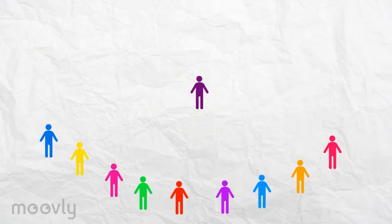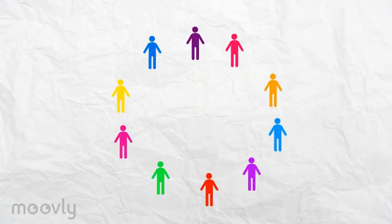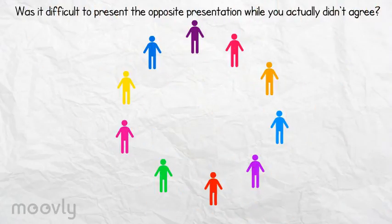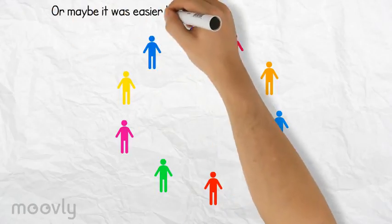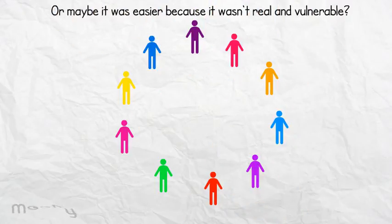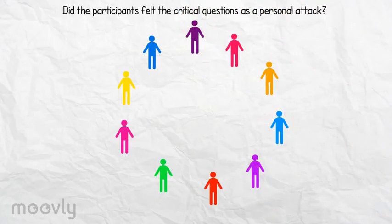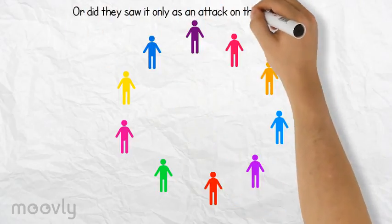Everyone now sits in a circle and evaluates the exercise. Was it difficult to present the opposite presentation while you actually didn't agree with it? Or maybe it was easier because it wasn't real and vulnerable? Did the participants feel the critical questions as a personal attack or did they see it only as an attack on the subject itself?